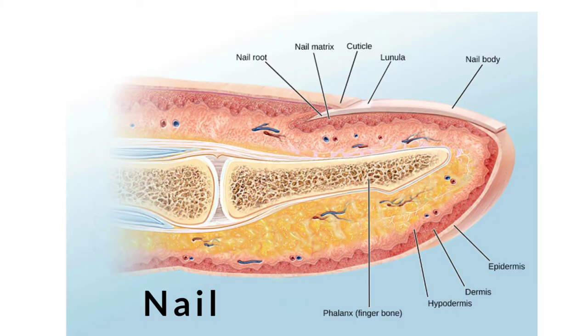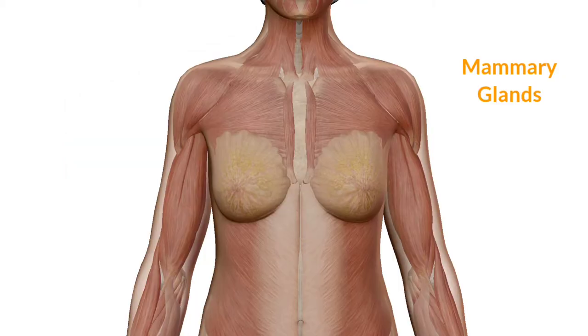Now comes to the nails. Nails are the hard plates of dead epidermal cells that have been converted into keratin. Each nail is embedded in the skin at the nail root. Beneath the root is the nail matrix, which consists of epidermal cells that divide to produce new nail cells, allowing the nail to grow.